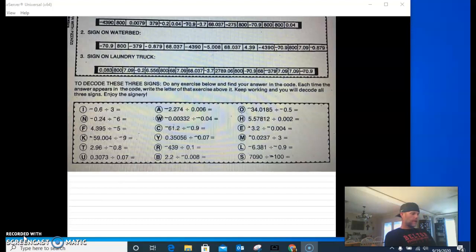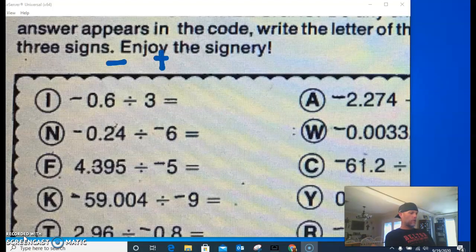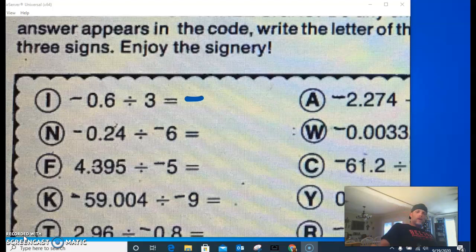So the first problem is negative 6 tenths divided by positive 3. So think about our rules. We have a negative and a positive. Those eyes look busted, so we're sad. So our answer is going to be negative. Now we don't have to mess with the signs anymore. Negative 6 tenths divided by 3. So we're taking negative 6 tenths or just 6 tenths because we've already got the sign, and we're dividing it into 3 equal parts. Decimals, think about money. You're taking 60 cents and dividing it between 3 people.